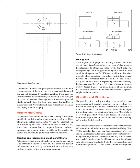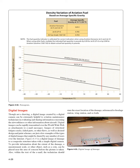Digital images: Though not a drawing, a digital image created by a digital camera can be extremely helpful to aviation maintenance technicians in evaluating and sharing information concerning airworthiness or other aircraft information. Digital images can be rapidly transmitted over the World Wide Web as email attachments. Digital images of structural fatigue cracks, failed parts, or other flaws, as well as desired design and paint schemes, are just a few examples of the types of images that might be shared by users over the Internet. A measurement scale or other object such as a coin can be placed near the area of concern before the picture is taken to indicate the extent of damage. Within the email text, the technician should state the exact location of the damage by reference to fuselage station, wing station, and so forth.